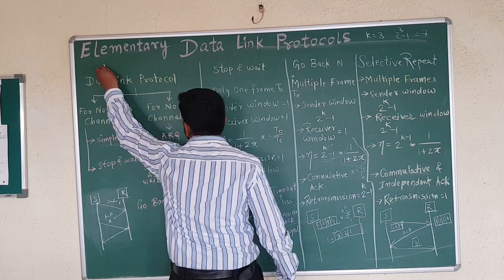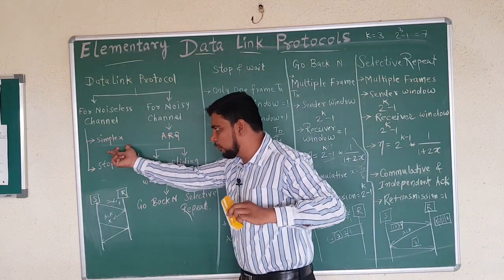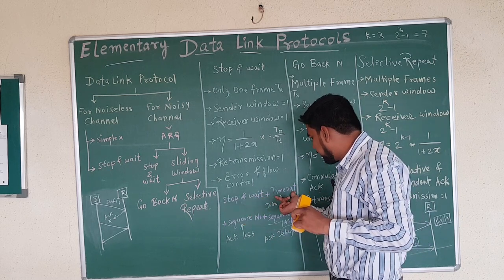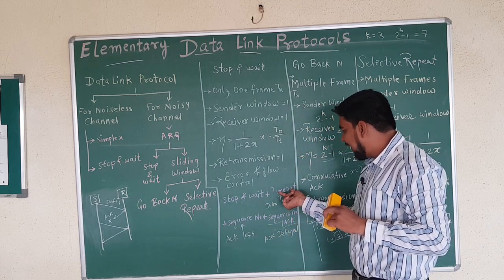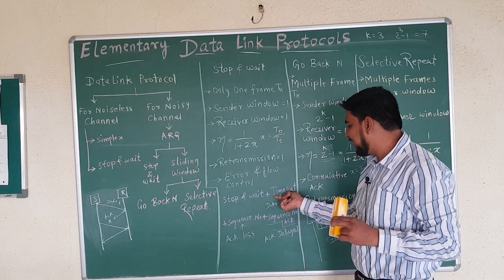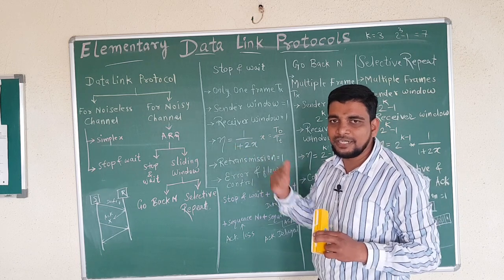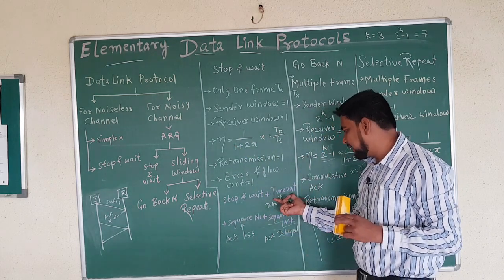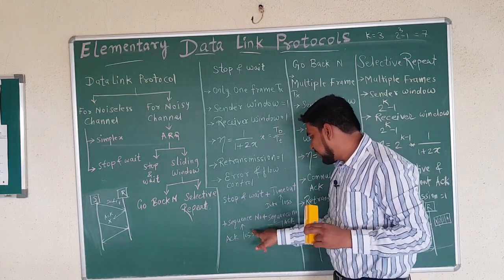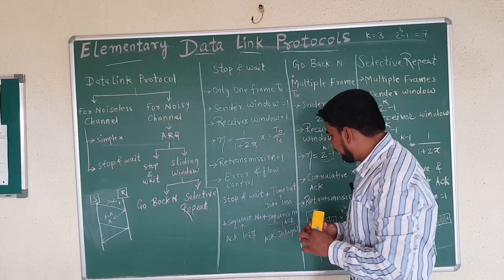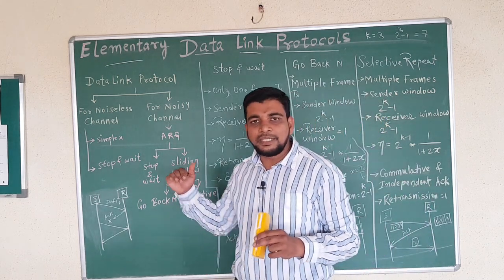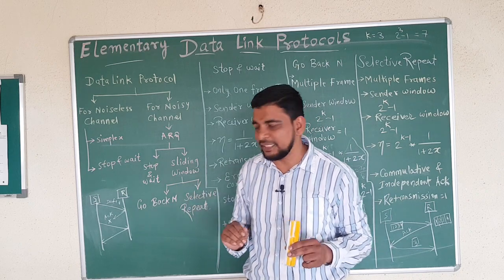In summary, we covered elementary data link protocols. Simplex protocol is unidirectional. Stop-and-wait: timeout means data loss — the sender retransmits after waiting; sequence number handles acknowledgement loss — the frame is resent since no ACK arrived; acknowledgement delayed — the sender retransmits because the ACK arrived too late beyond the timeout window.